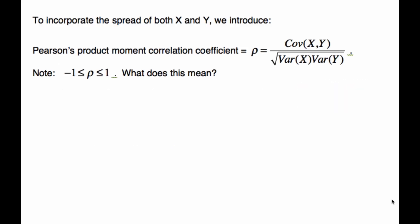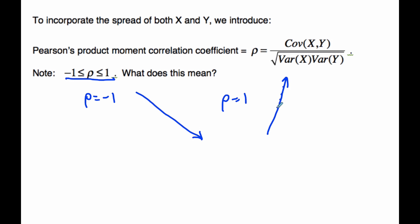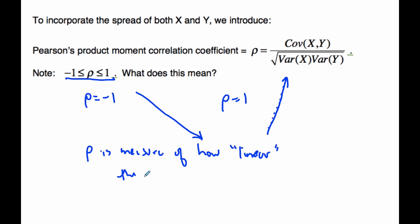One important note: rho is always between negative one and one. If rho equals negative one, it is a perfect linear trend with a negative slope; if rho equals positive one, all the data points lie exactly on a line with a positive slope. Anywhere in between, rho measures overall how linear the relationship between the two variables is. Finally, a strong correlation does not mean causation.